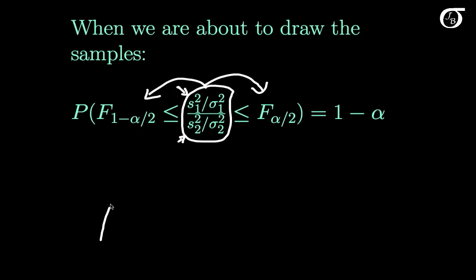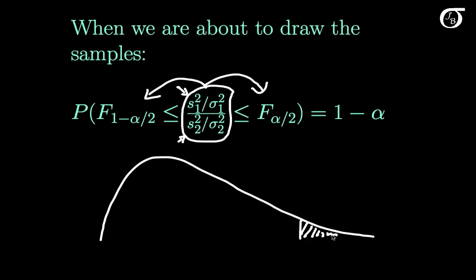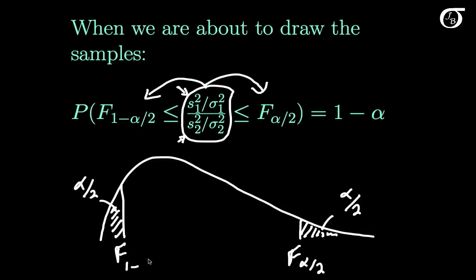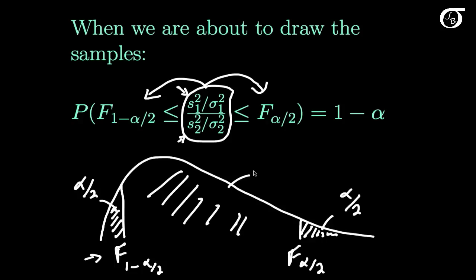Visually, that's going to look something like this. If we draw out an F distribution with the appropriate degrees of freedom, there is some F value over here that has an area to the right of alpha over 2, and we call that F value F sub alpha over 2. And there's some F value over here that yields an area to the left of alpha over 2. We call that value F sub 1 minus alpha over 2, because this F value has an area of 1 minus alpha over 2 to the right. So this middle area here is 1 minus alpha, and the probability that this random variable takes on a value between these two values is 1 minus alpha.